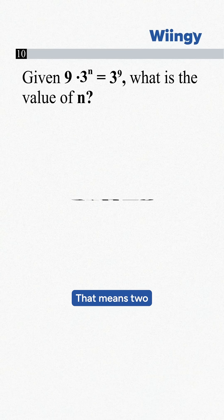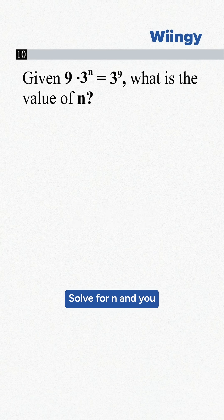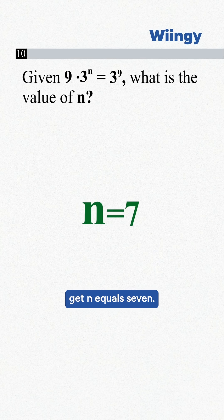That means 2 plus n equals 9. Solve for n, and you get n equals 7.